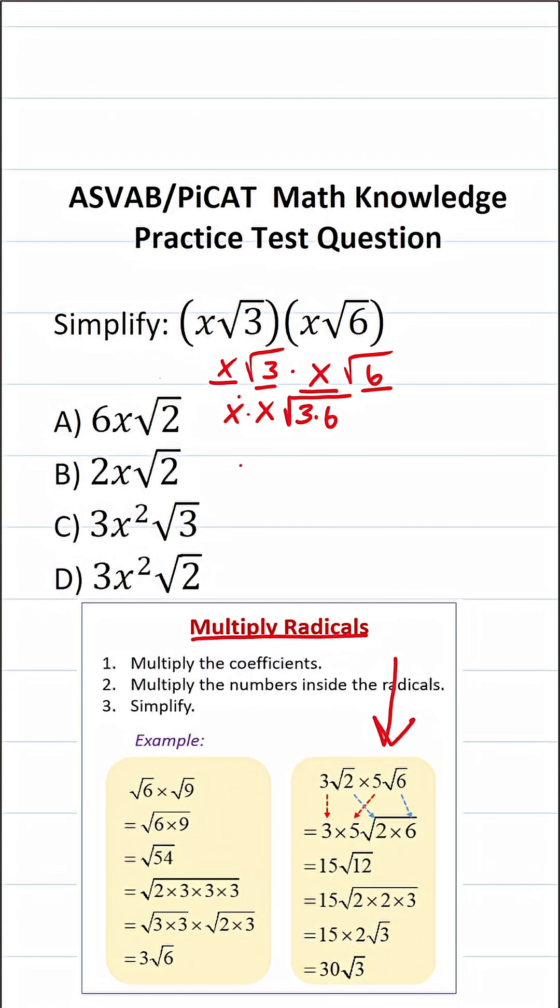x times x is going to be x squared. Three times six is going to be 18.